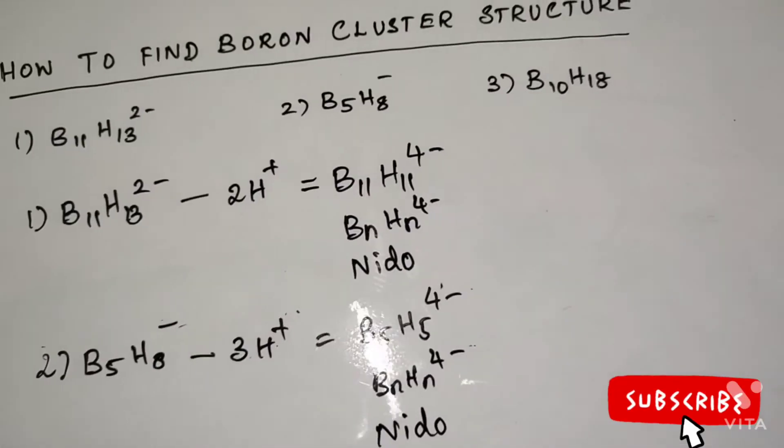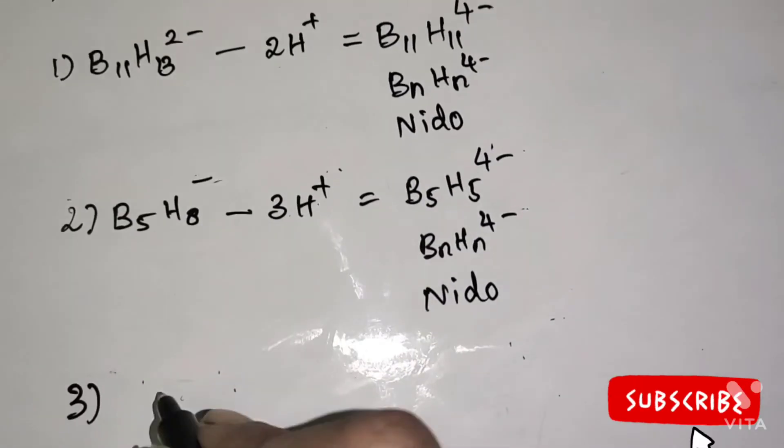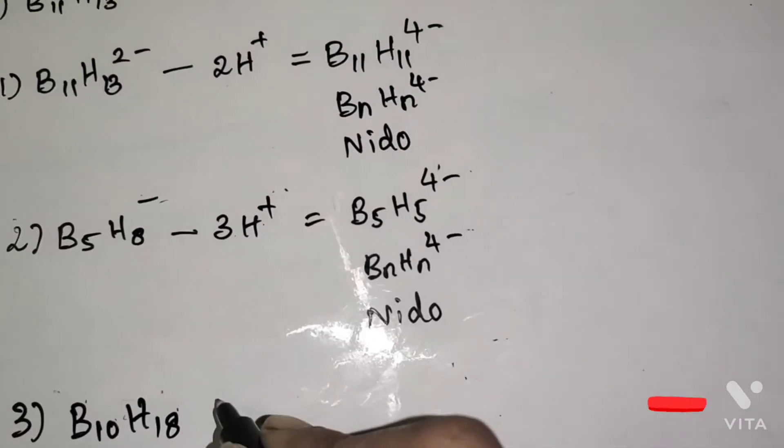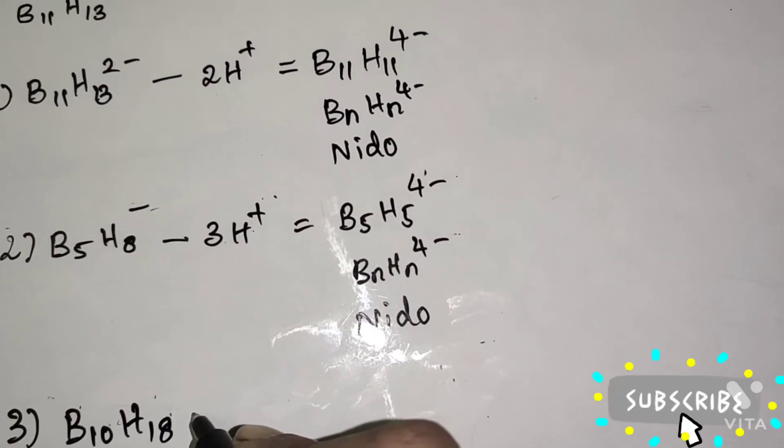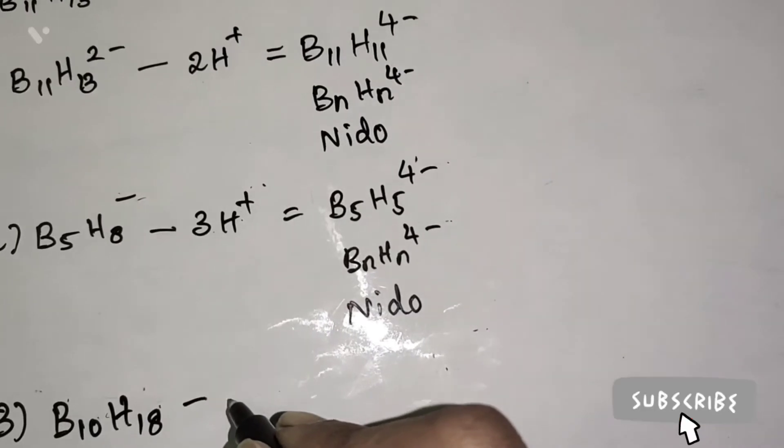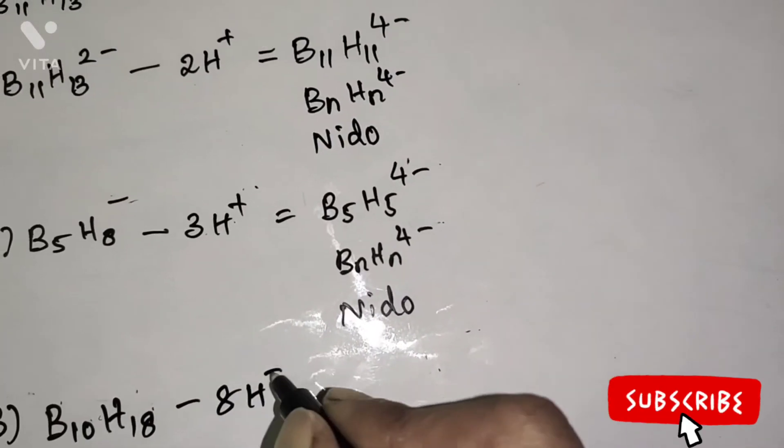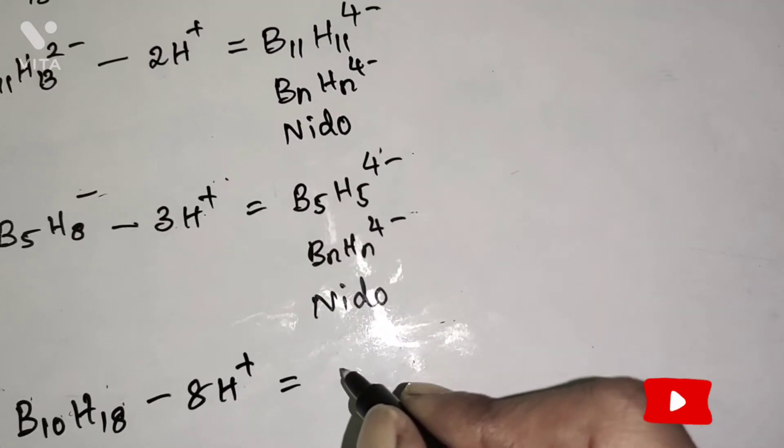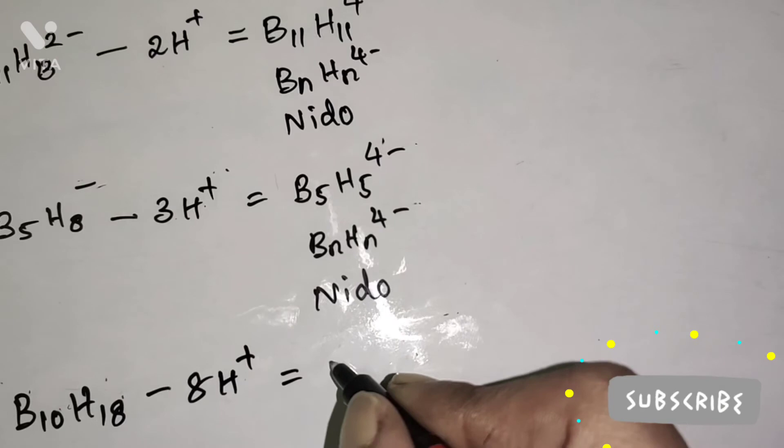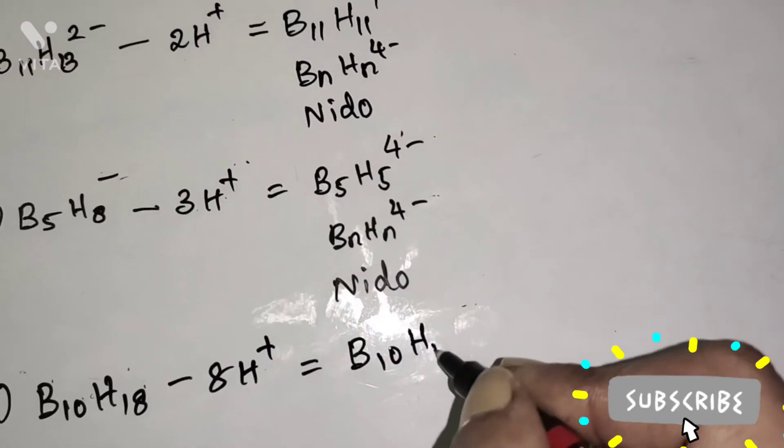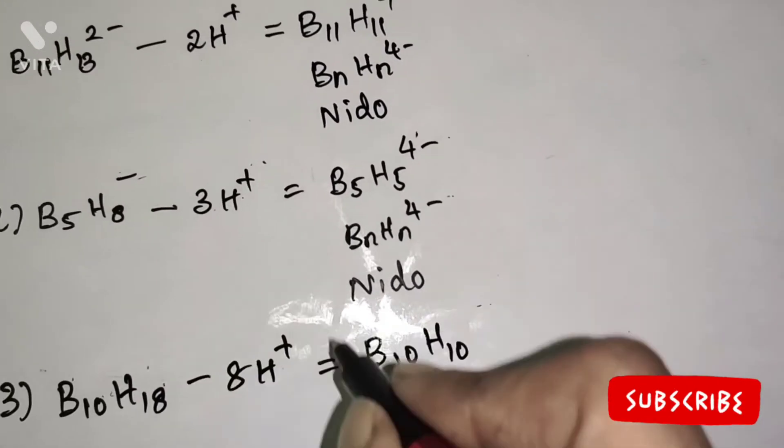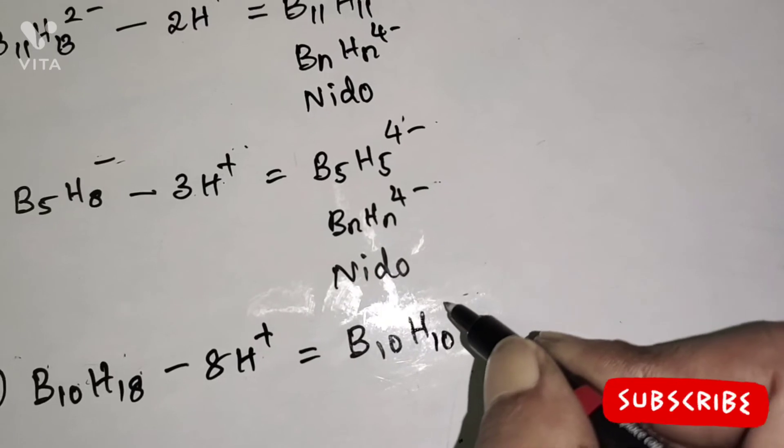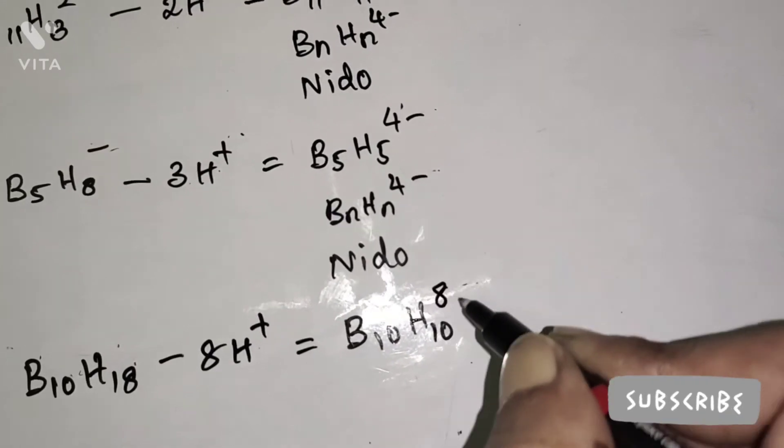Third cluster compound is B10H18. Subtracting 8 hydrogen ions to make the number of boron and hydrogen atoms equal. Therefore, B10H10, 8 hydrogen ions are removed. Therefore, the total charge is 8 minus.